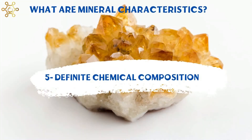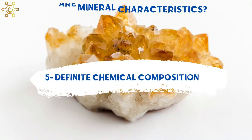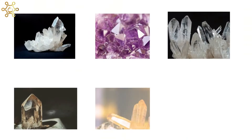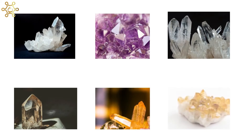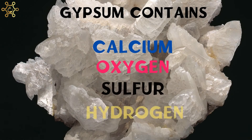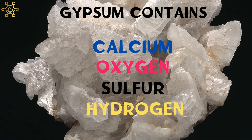Definite chemical composition: a mineral has a definite chemical composition. The repeating pattern of a mineral's particles forms a solid called a crystal. Gypsum, for example, always contains calcium, oxygen, sulfur, and hydrogen in set proportions.